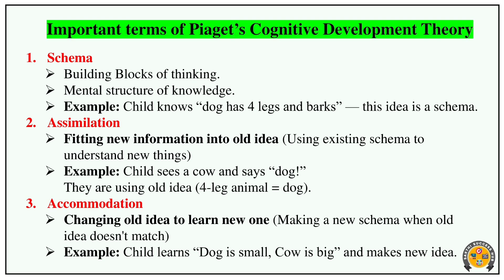Three important concepts in Piaget's theory: Schema, Assimilation, and Accommodation. Schema is a mental structure of our knowledge. For example, a child knows a dog has four legs — that knowledge forms a mental structure or schema.